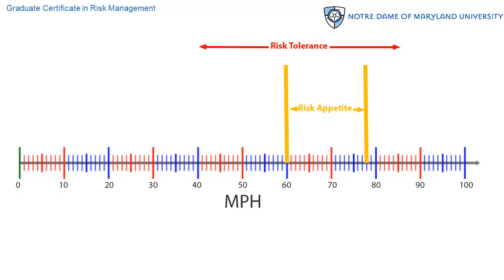So my risk tolerance is wider than 60 to 78. If I specify it, I would say it's 40 to 85 miles per hour. I worry about my safety above 85, and if I see I am above that speed, I take immediate corrective action. If my interstate speed drops below 40, I'm going to look for an alternate time when traffic is not so heavy, or an alternate route where traffic is flowing better. When I exceed these tolerable deviations from my appetite, I take immediate risk management steps to reduce my risk — slowing down to reduce risk to life and safety, as well as the risk of a speeding ticket.